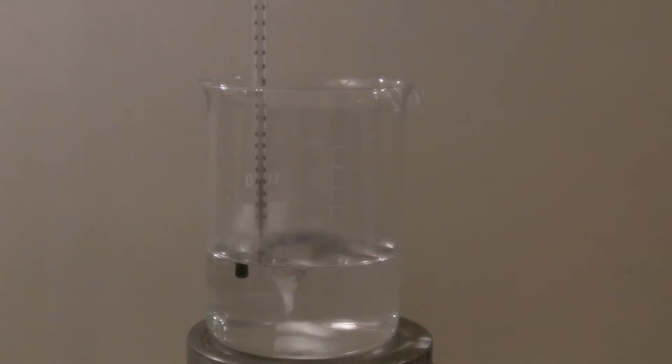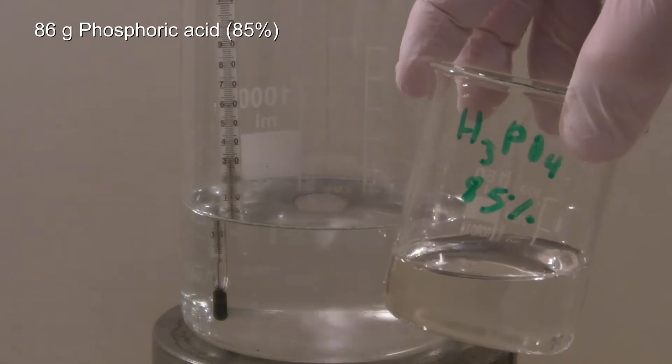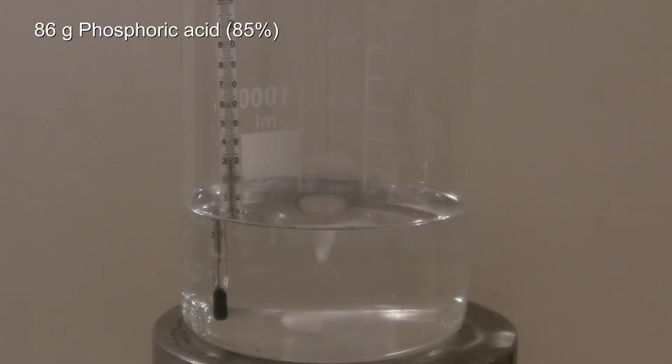Then a thermometer was added to keep track of the temperature. 86 grams of 85% phosphoric acid were added slowly while stirring.